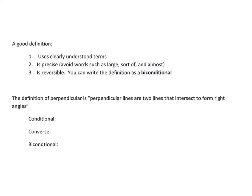The second part of the lesson covers writing a good definition. A good definition uses clearly understood terms — nothing vague. It is precise and specific, avoiding unnecessarily complicated language. It is also reversible, meaning you can write it as a biconditional. For example, the definition of perpendicular lines: perpendicular lines are two lines that intersect to form right angles.